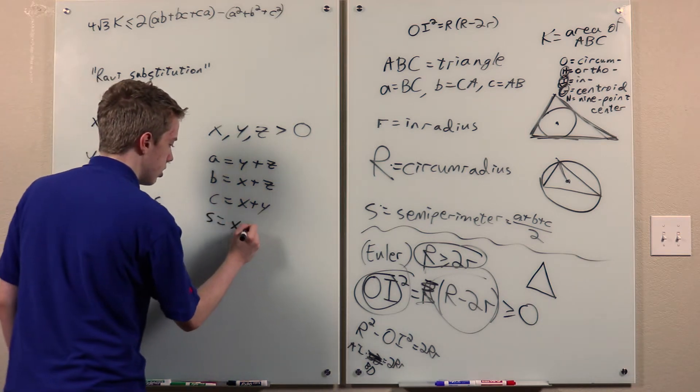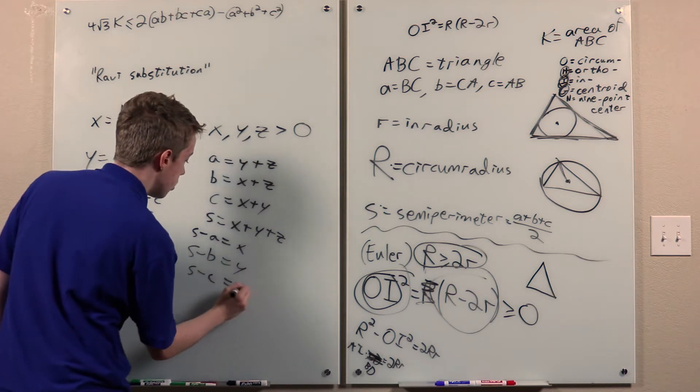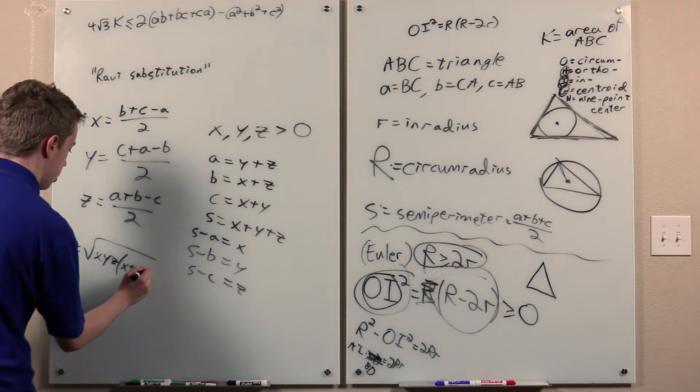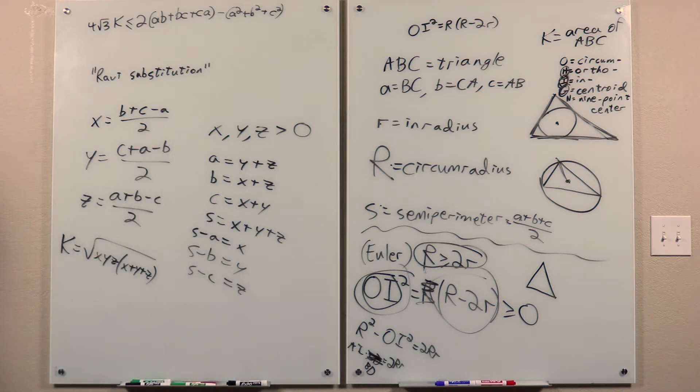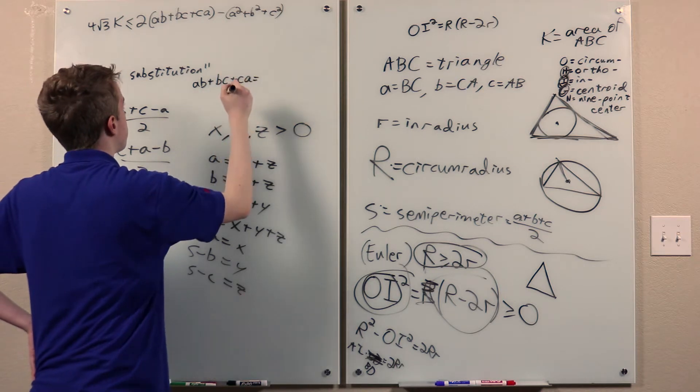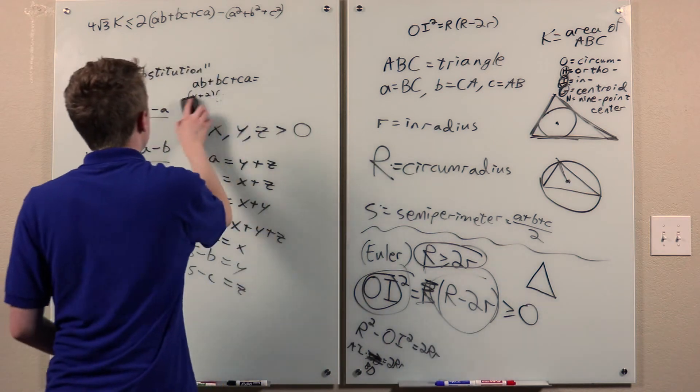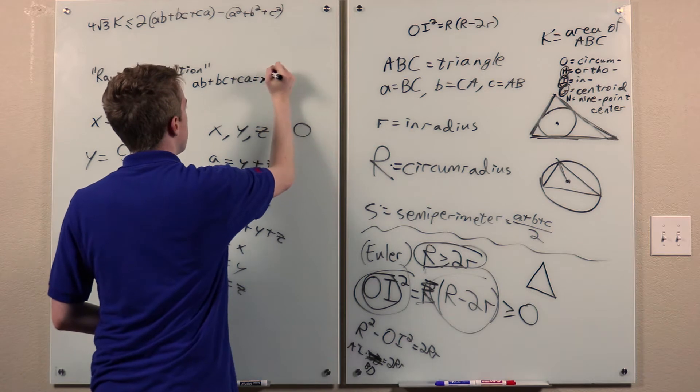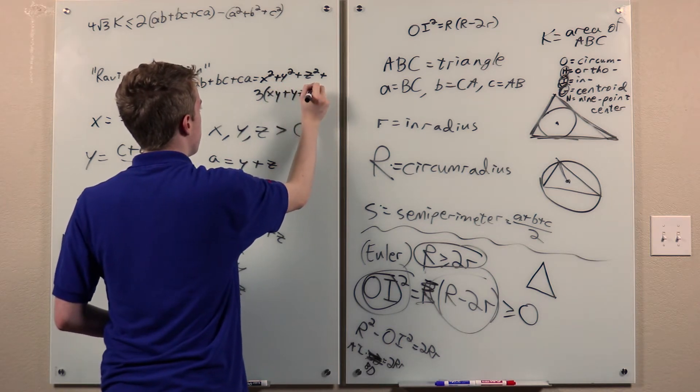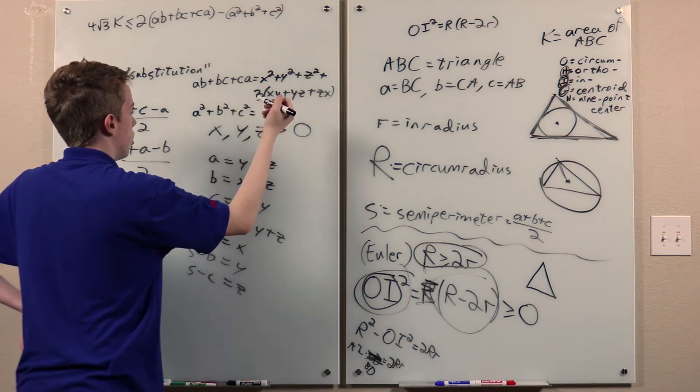Now we can even further say this. Then, s minus a equals x, s minus b equals y, and s minus c equals z. So now, Herron's formula lets us write this. Okay. So, furthermore, we can compute this as... it's just computation to see that this is this, and this is this, and this is this.